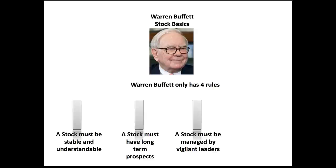The third rule is that a stock must be managed by vigilant leaders. One thing rolled up into this tenant is that the company has to be managed by individuals who manage debt well. Buffett really stays away from any company that has a lot of debt. For a standard investor, it's hard to go in and have a meeting with the CEO to determine whether he's an ethical person you'd want to own part of. That's the third rule.